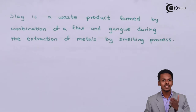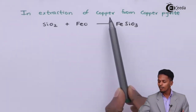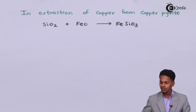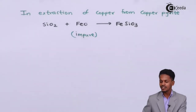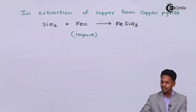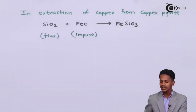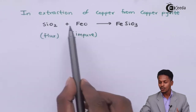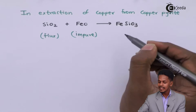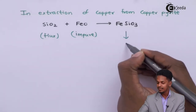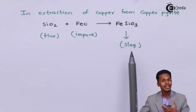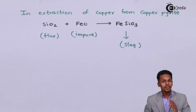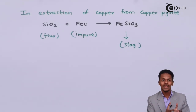For example, in the extraction of copper from copper pyrite, FeO (ferrous oxide) is the impurity present. We use SiO2 as a flux — SiO2 reacts with FeO to form ferrous silicate (FeSiO3), which is removed in the form of slag. This slag is fusible and easily removed, allowing us to obtain a crude metal.